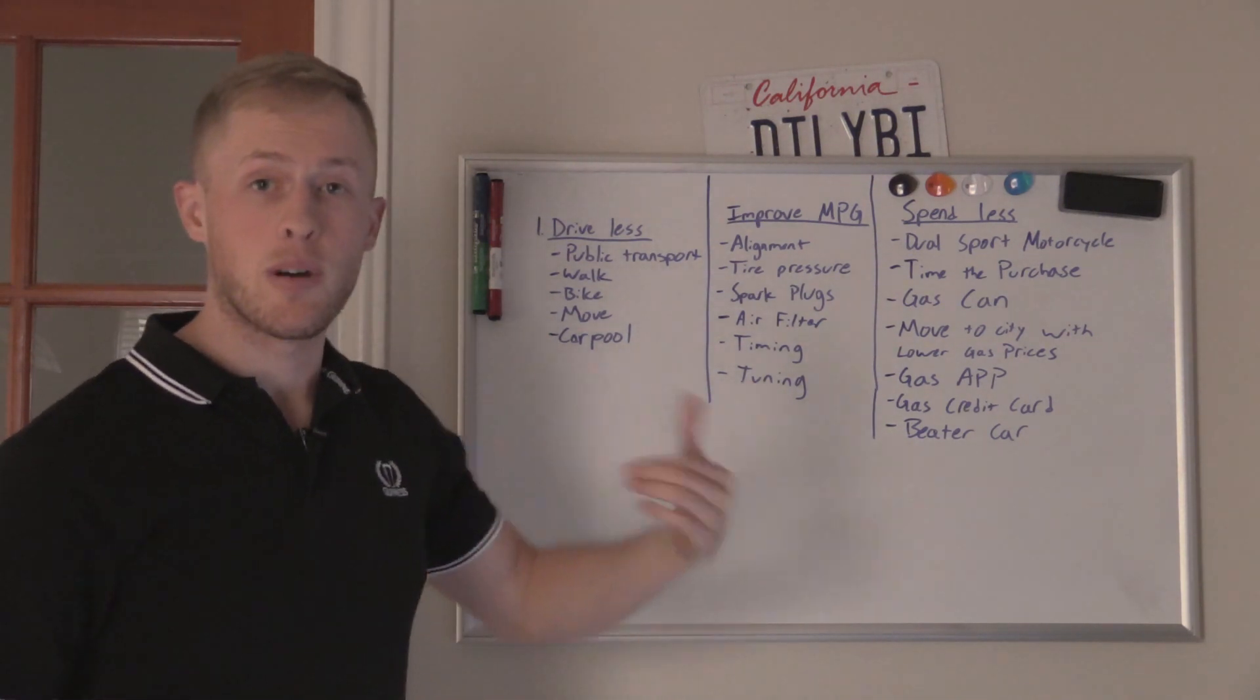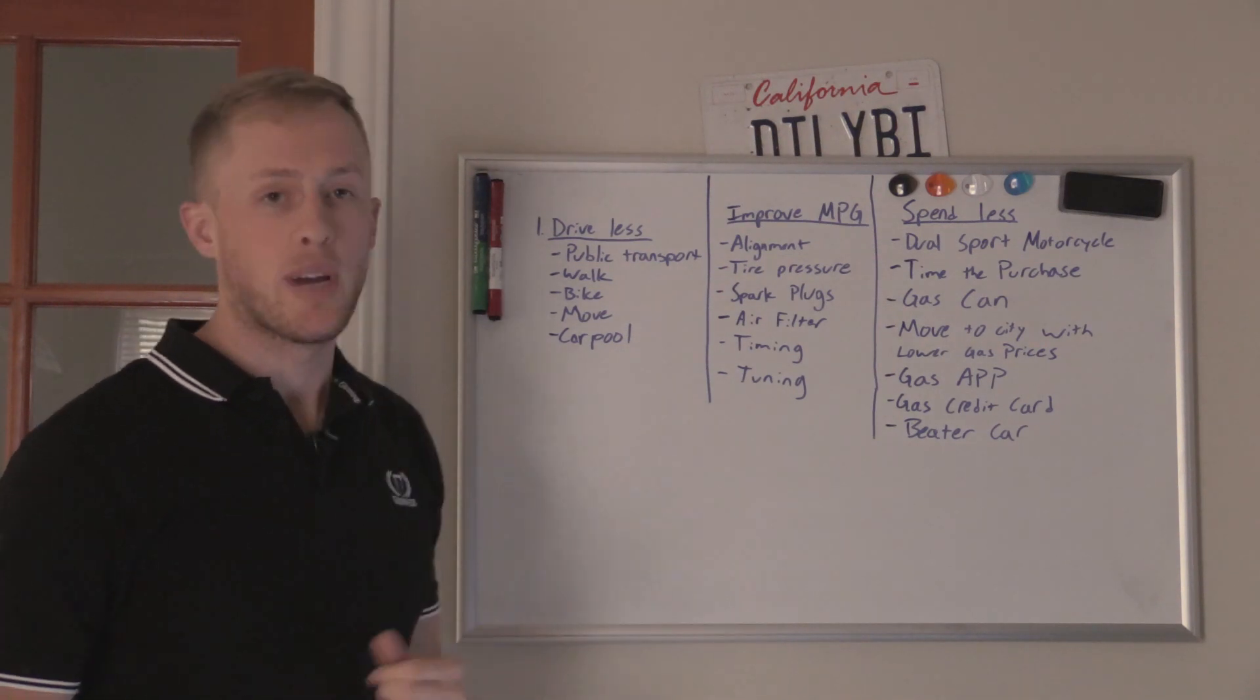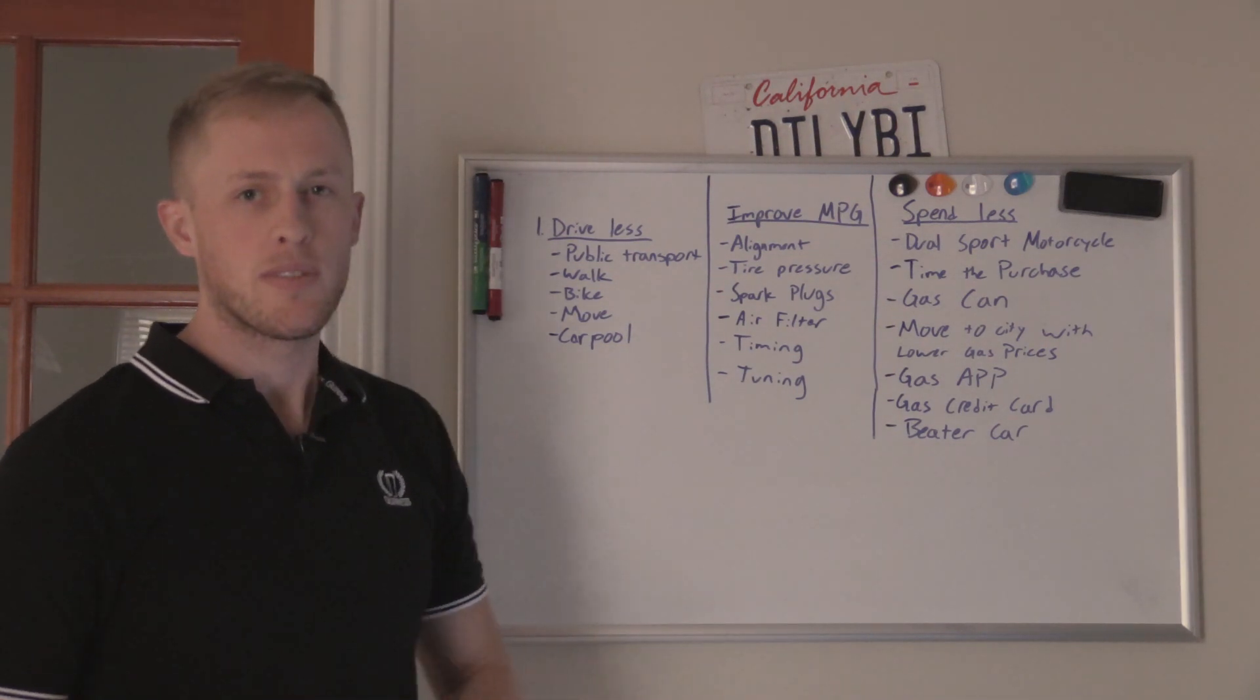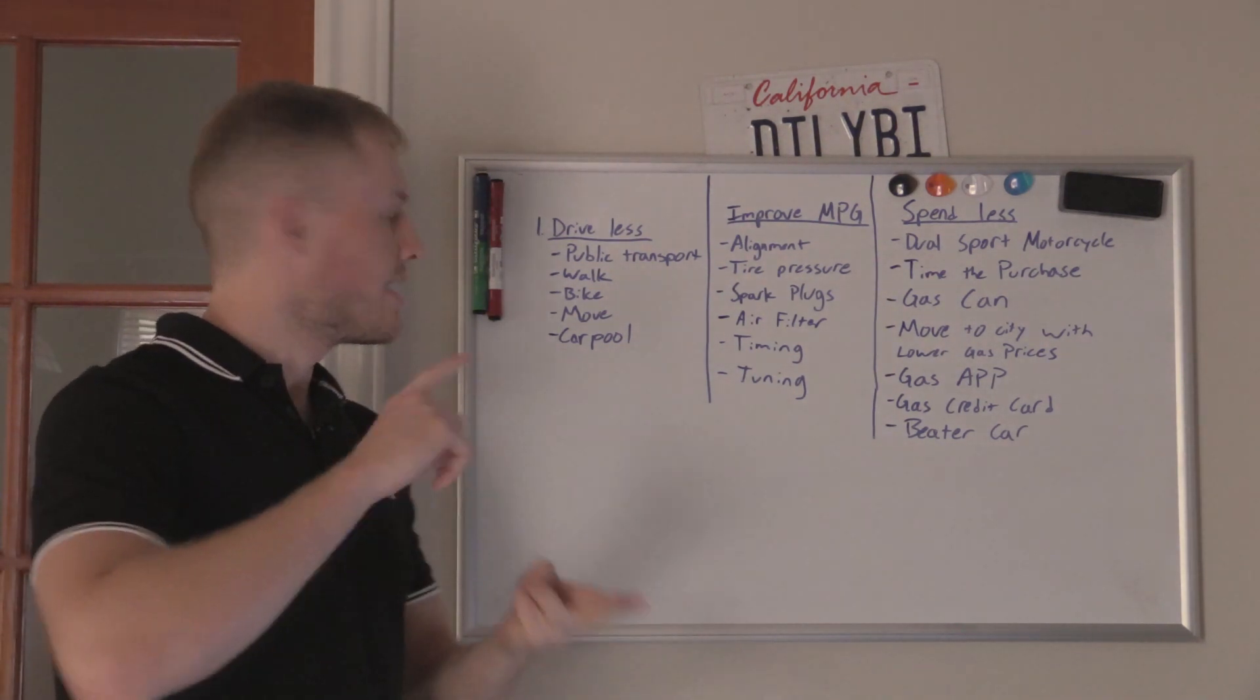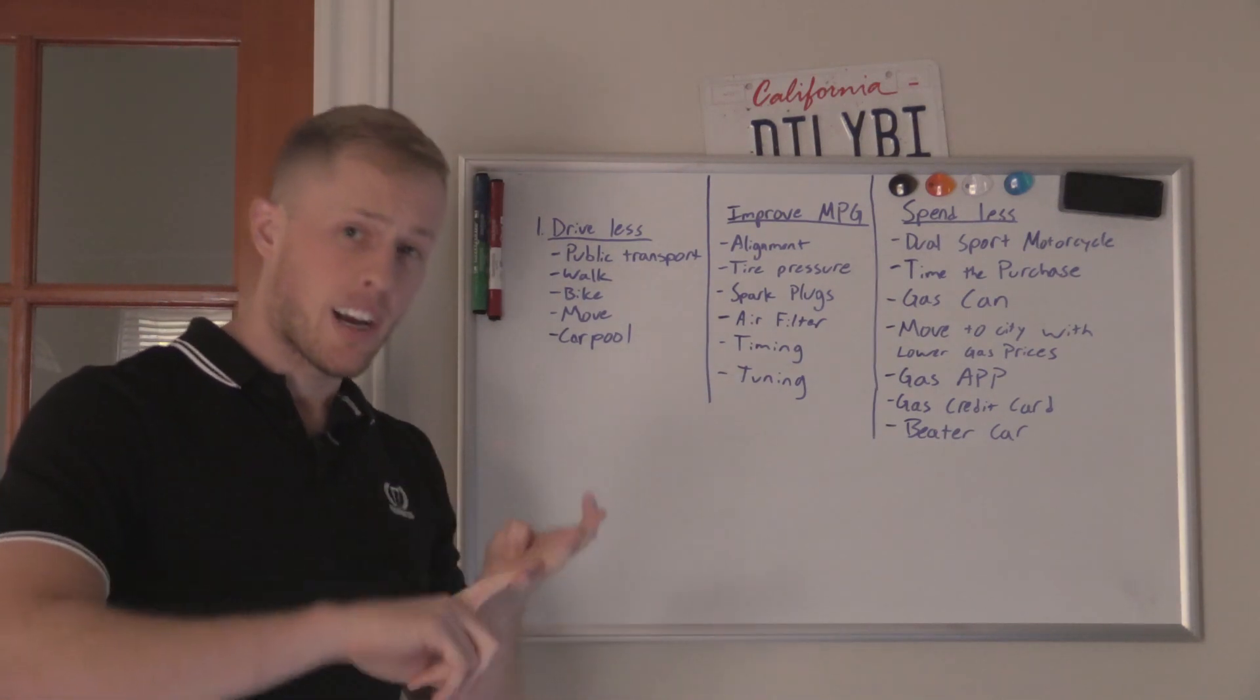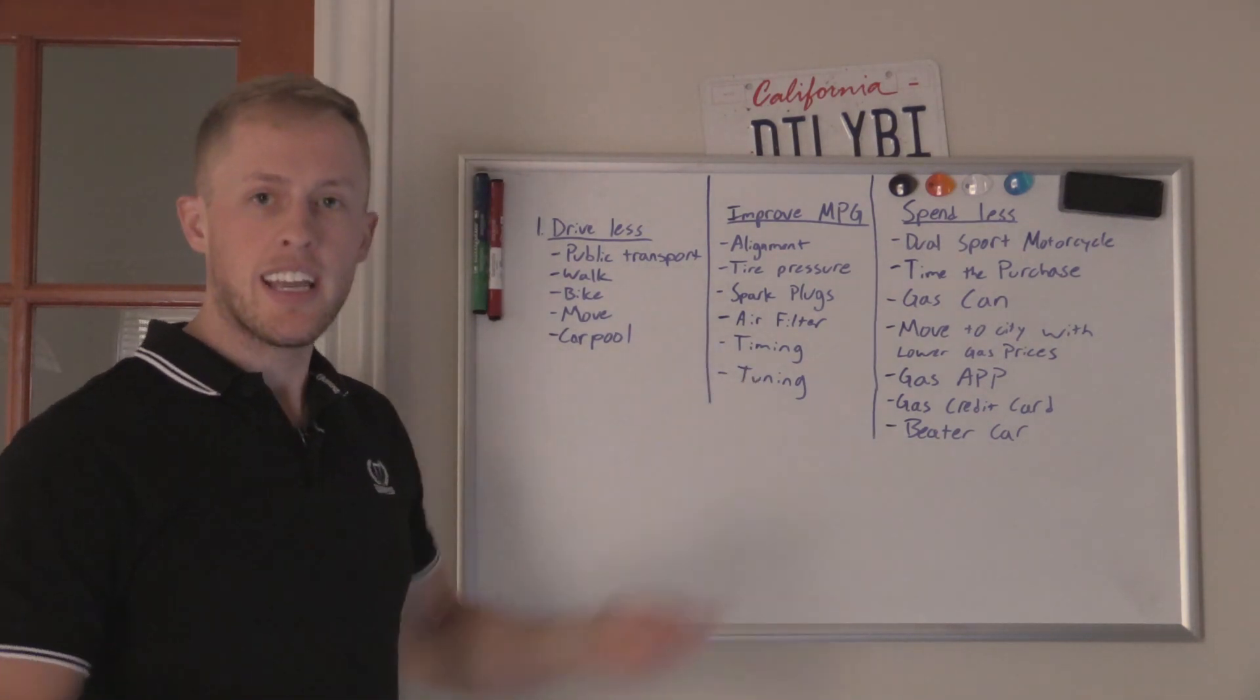Next, we can talk about improving mile per gallon for the vehicles that we do have. Some simple things that I do to my vehicles are alignment, tire pressure, spark plugs, air filter, timing, and tuning.